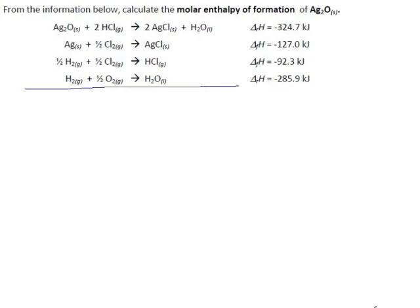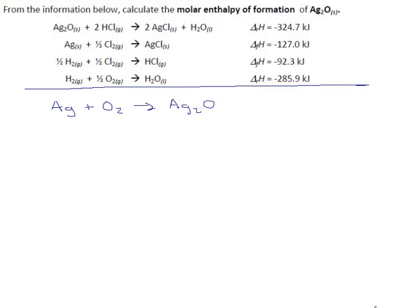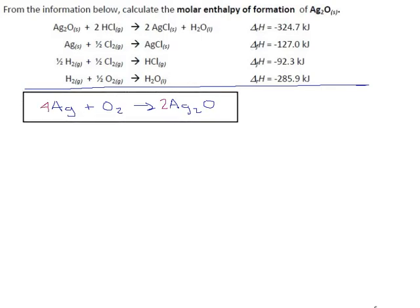We're forming silver oxide, so we must have a reaction that produces Ag₂O. Formation reactions are always from pure elements, so on this side we would have to have silver, and we would have to have oxygen. Proper reactions are balanced, so to balance this, if we have O₂, we have to double this side to get our oxygen sorted, but that means we have four silver, so we need a four over here. So this is our objective.